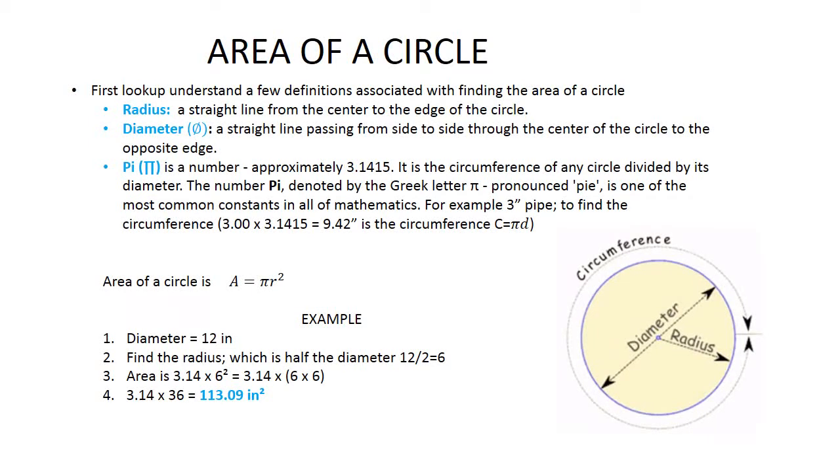Calculating the area of a circle. First, we've got to understand some definitions. The radius is a straight line from the center to the edge of the circle. The diameter is a straight line passing from one side to the other side through the center of the circle.